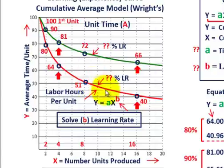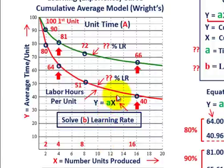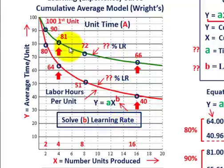For calculating our learning rate, we're going to look at two different points: four units produced and sixteen units produced. The equation for average time per unit is: y equals a times x raised to the power of b, where a is the time to produce the first unit and b is the learning rate exponent. The red line represents one learning rate curve and the green line represents another. You can take any two points on these curves to calculate your learning rate.